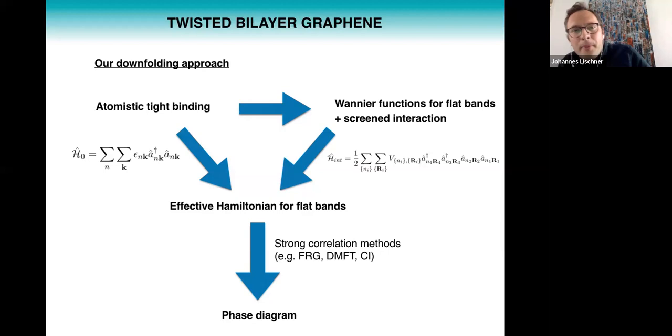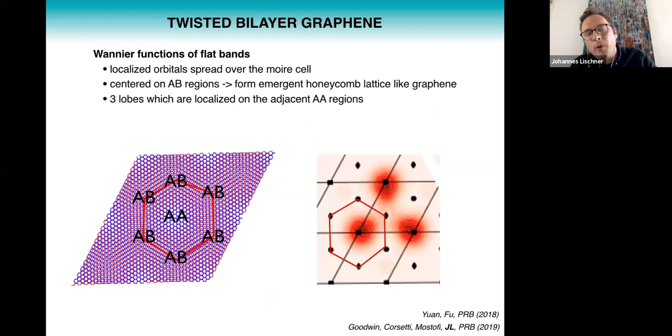So the first step is to get the Wannier functions of the flat bands. What we did is we developed an interface from our tight binding code to the Wannier90 code, and then we could calculate these Wannier functions which are localized orbitals but they are spread out over the entire 10,000 atom moiré cell.